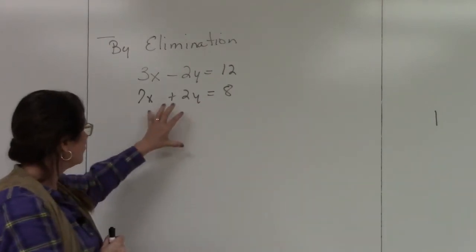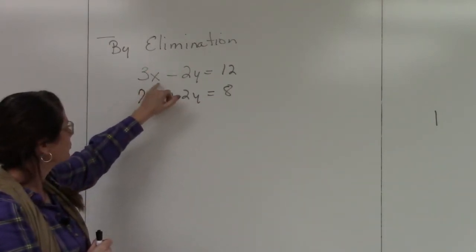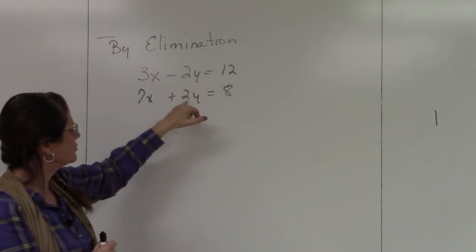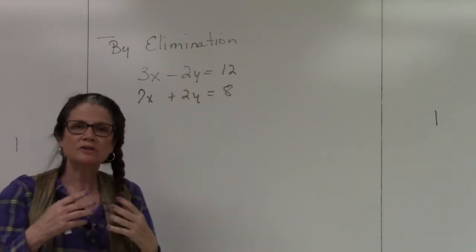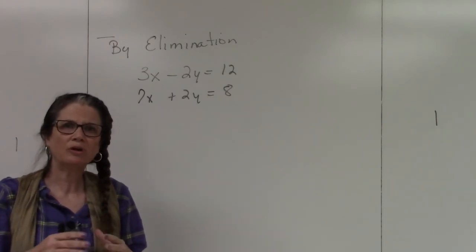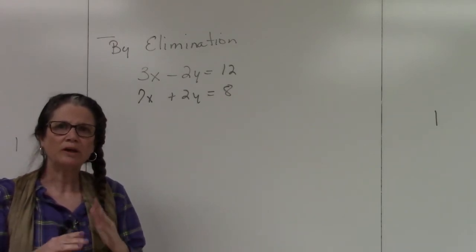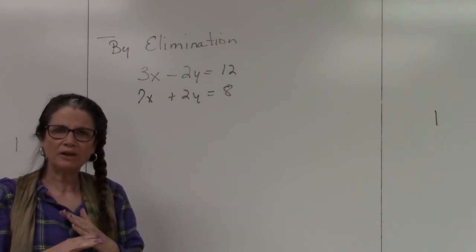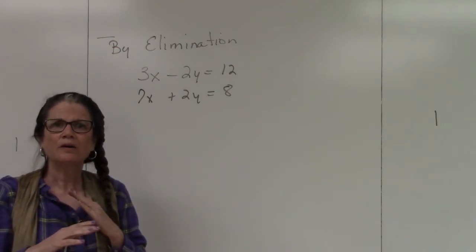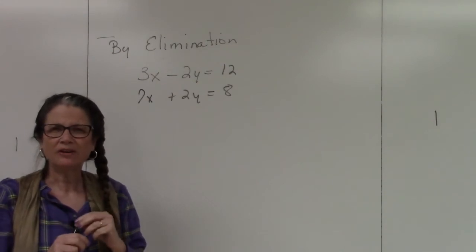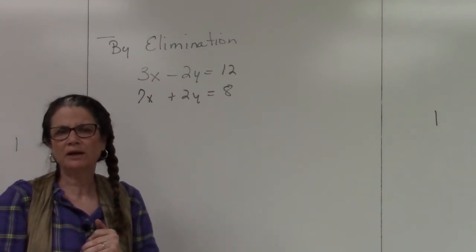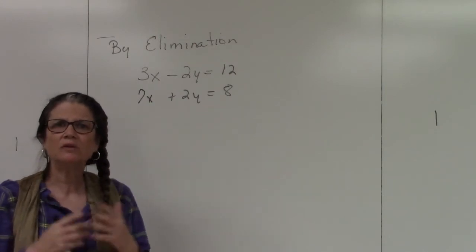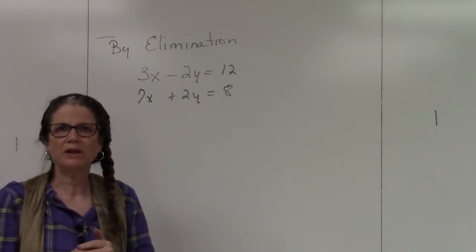So when we look at this one, we have 3x minus 2y equals 12 and then we have 7x plus 2y equals 8. It's still the same idea. What we're doing is we're trying to find the one point where both of these lines will cross. Well, if you do it with graphing, that's one way, but if it's not an exact value, then it's a little bit harder to pick up what the x and the y value is.